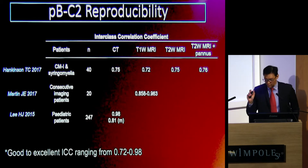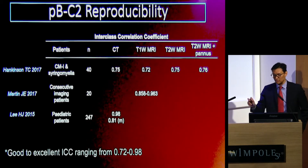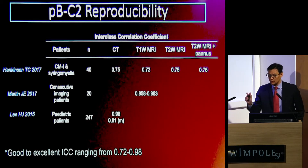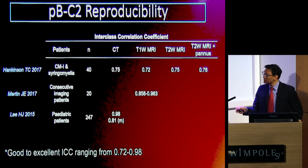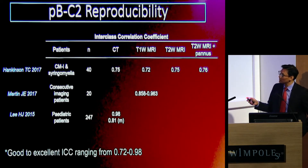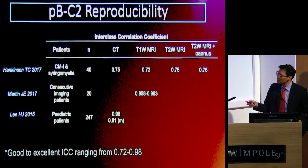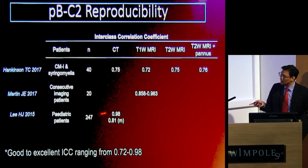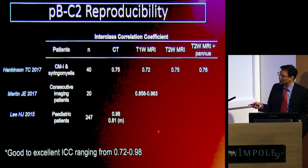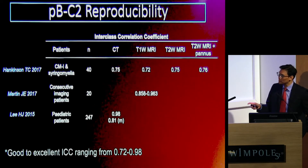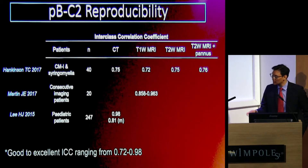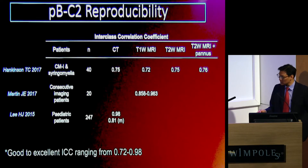The measurement described in the initial paper was very prescriptive — it is to the ventral aspect of the dura. But there are some variations in terms of including the pannus. Obviously looking at the ventral aspect of the dura on CT can be quite challenging. And if you're looking at paediatric patients versus other clinical groups, that can be slightly variable depending on the degree of pannus that's formed in the dorsal aspect of the dens.